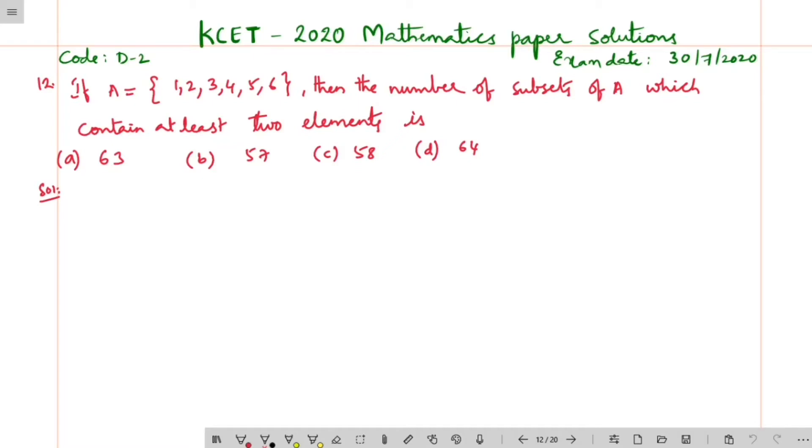Given a set A is equal to {1, 2, 3, 4, 5, 6}, then the number of subsets of A which contain at least two elements.